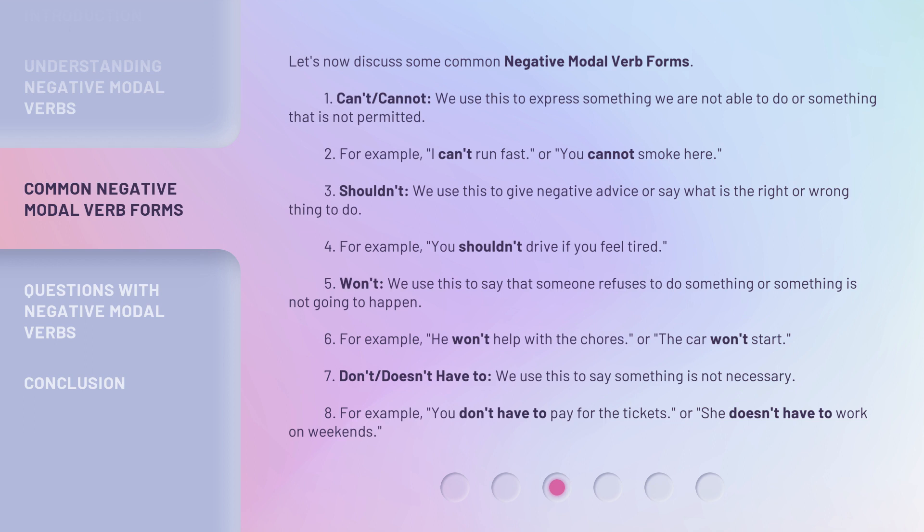3. Shouldn't. We use this to give negative advice or say what is the right or wrong thing to do. For example, you shouldn't drive if you feel tired. 5. Won't. We use this to say that someone refuses to do something or something is not going to happen. For example, he won't help with the chores.